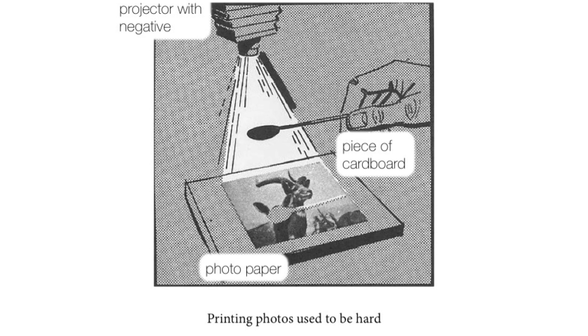In the darkroom, we have a projector and we put in the negative. We choose the paper carefully. Then we use a piece of cardboard to make some shadows and lights, and decide which parts are going to be brighter or darker. Then we use chemicals and put the print paper in to develop it. There are a lot of choices to be made, and if any are wrong, we have to start again from scratch — and we do all of this in the dark, so it's very easy to get it wrong.